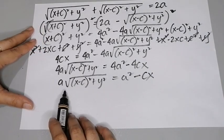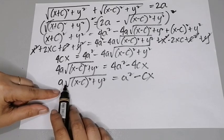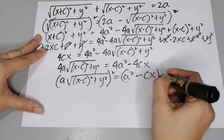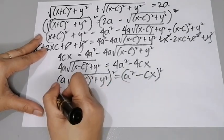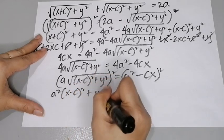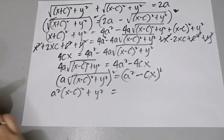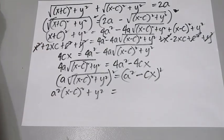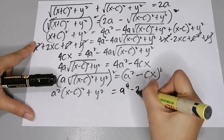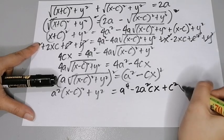We still have a radical sign, so we square both sides again. Squaring the left side gives a²[(x−c)² + y²], and squaring the right side gives a⁴ − 2a²cx + c²x².